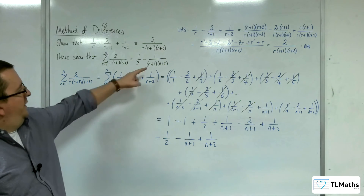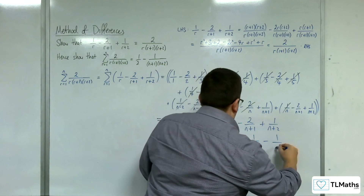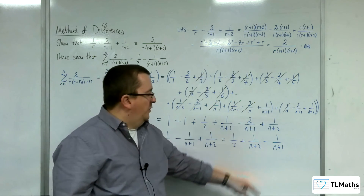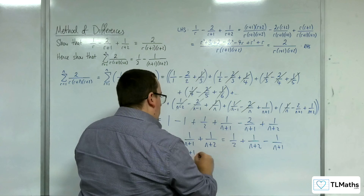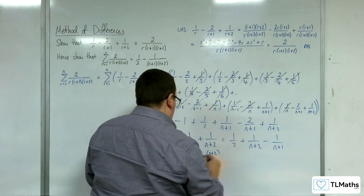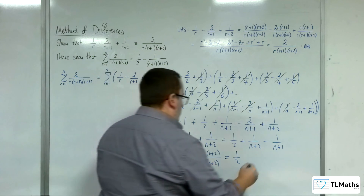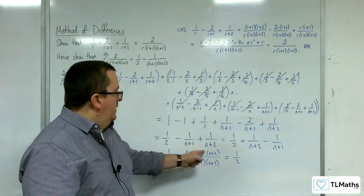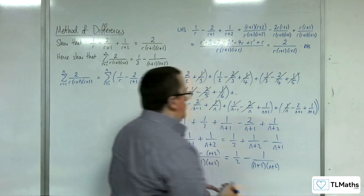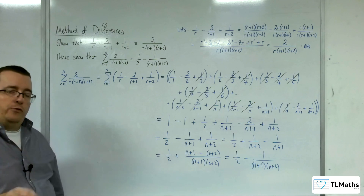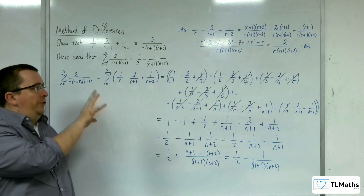I want to combine those two fractions. Let's rewrite them, and do cross multiplication. So we've got 1 half plus: multiply (n+1) take away (n+2), divided by (n+1)(n+2). So we've got 1 half plus, well, n take away n is 0, and 1 take away 2 gives minus 1. So, minus 1 over (n+1)(n+2) as required. This one was more fiddly because you had three terms and they cancelled out in triplets.